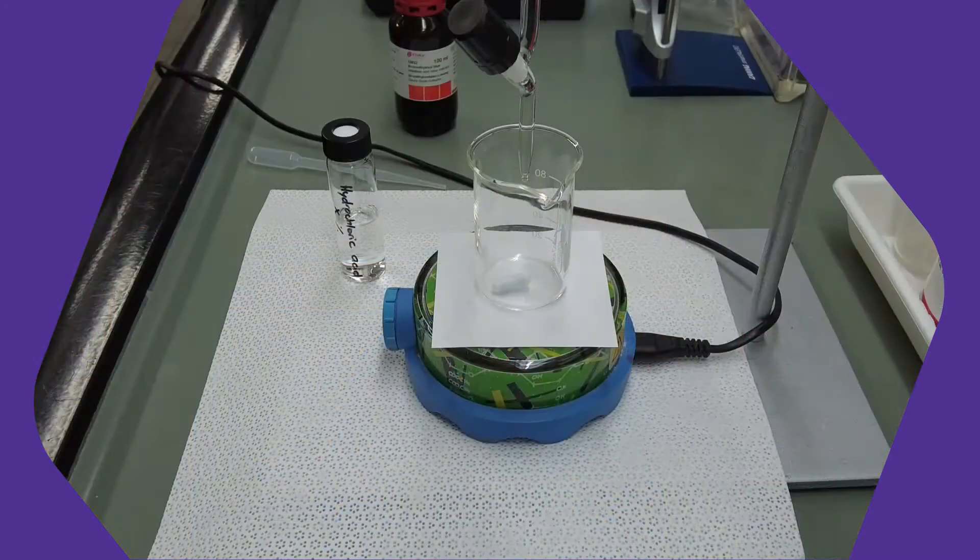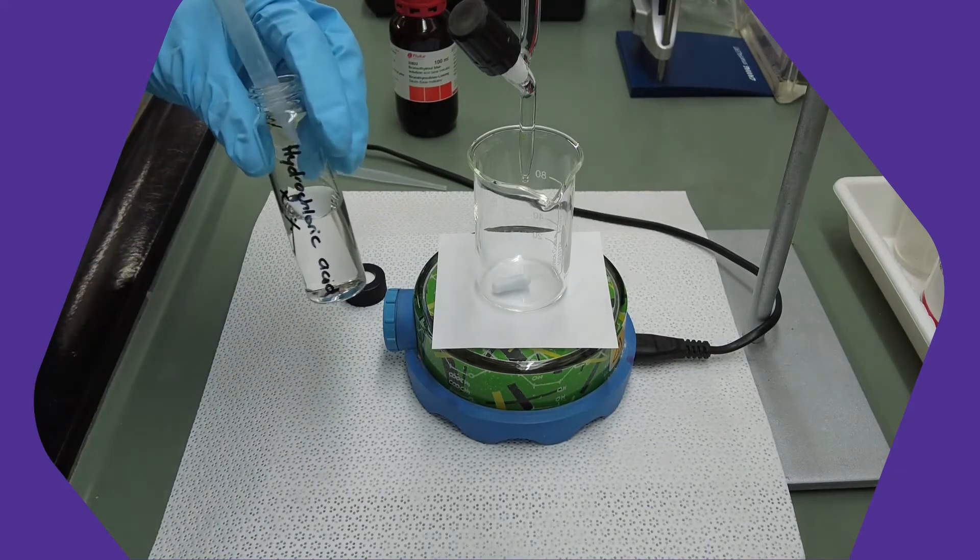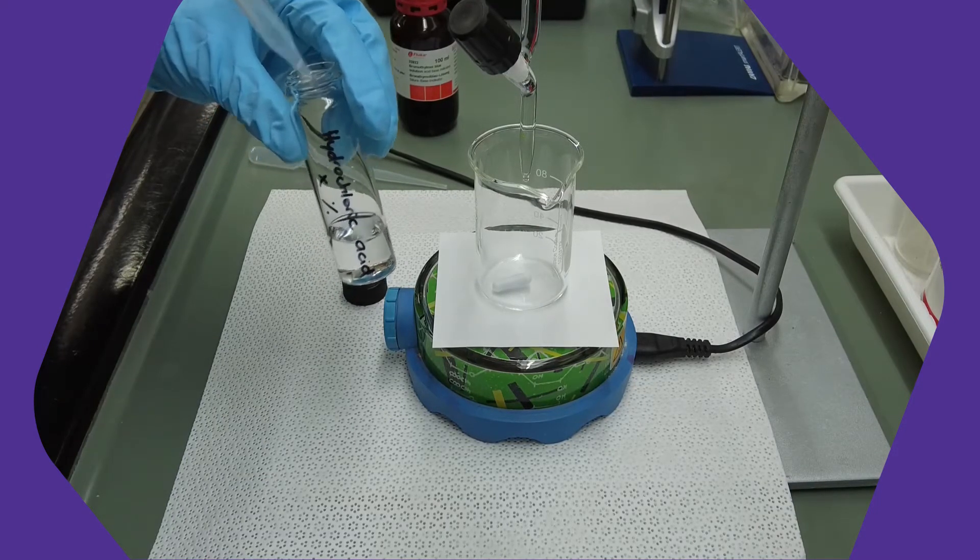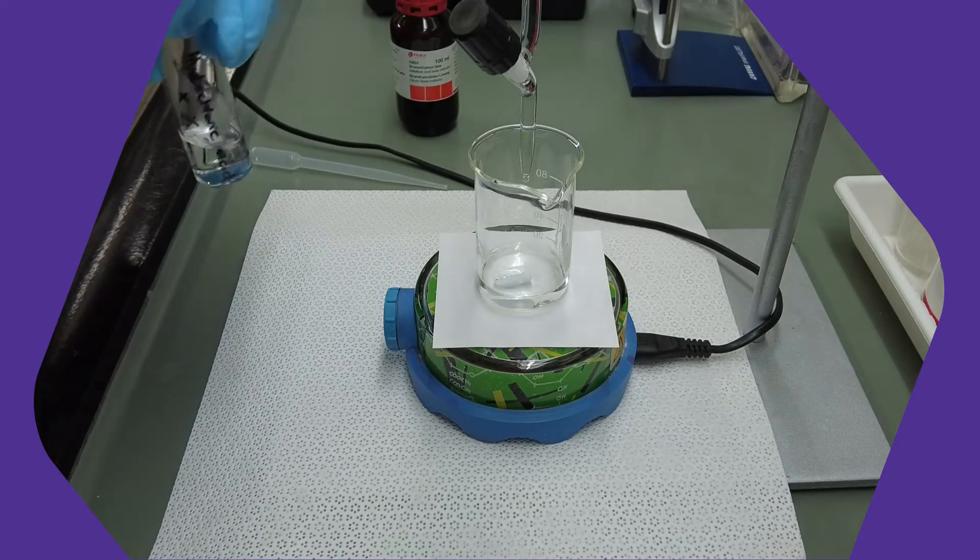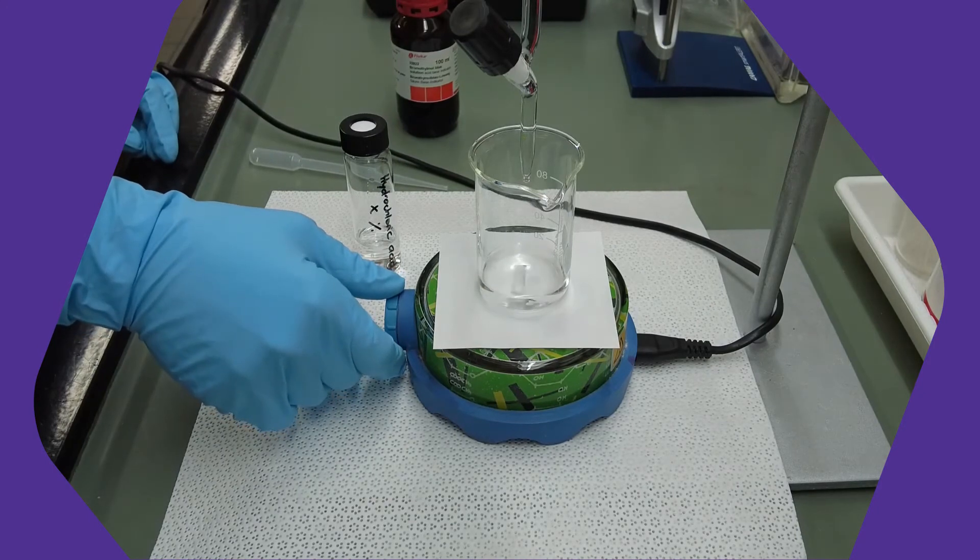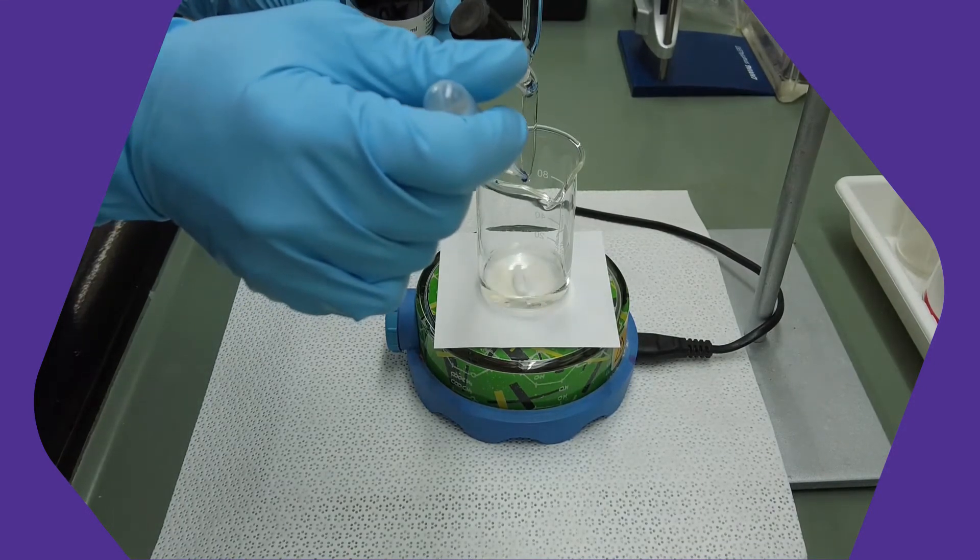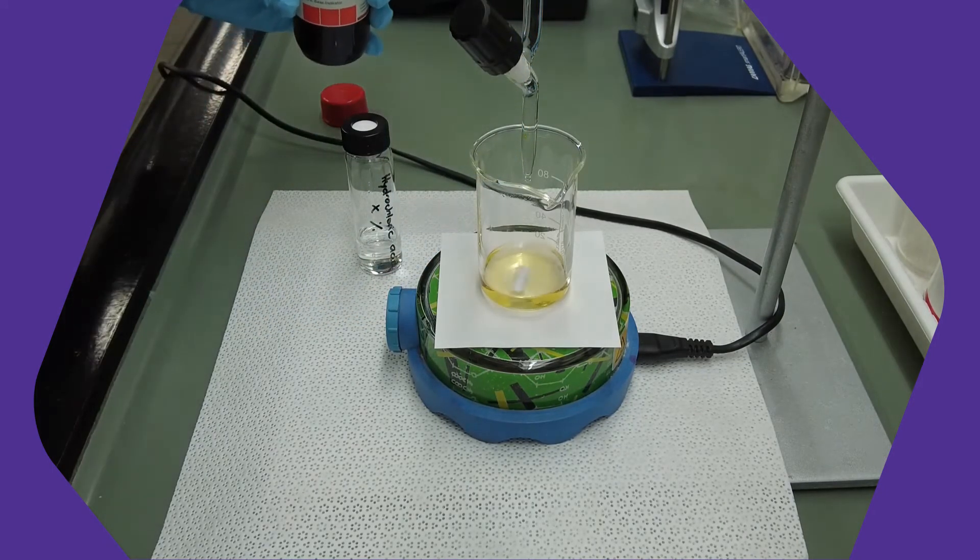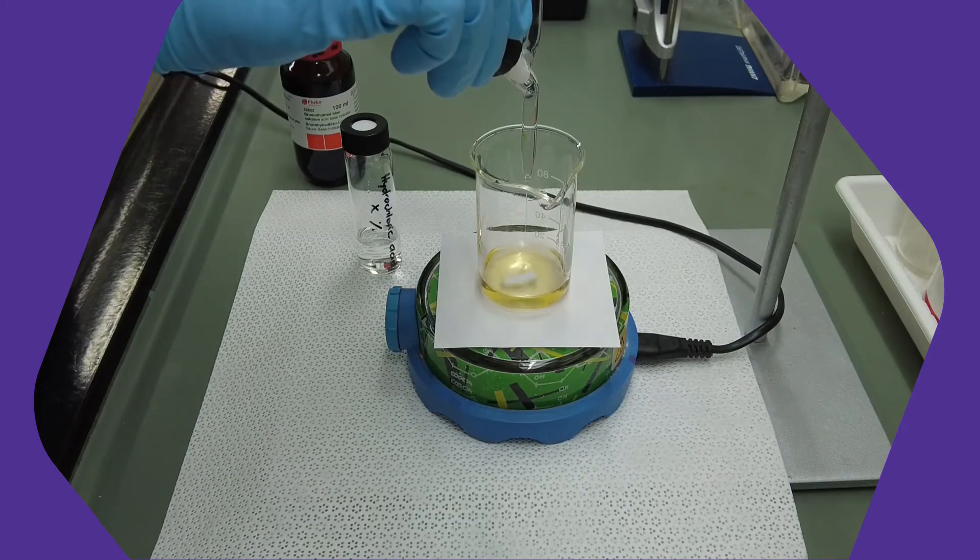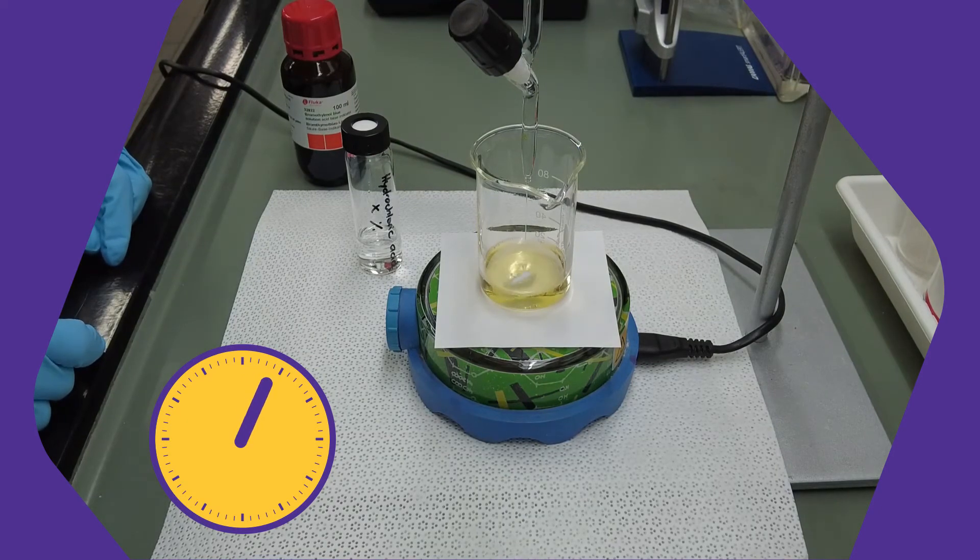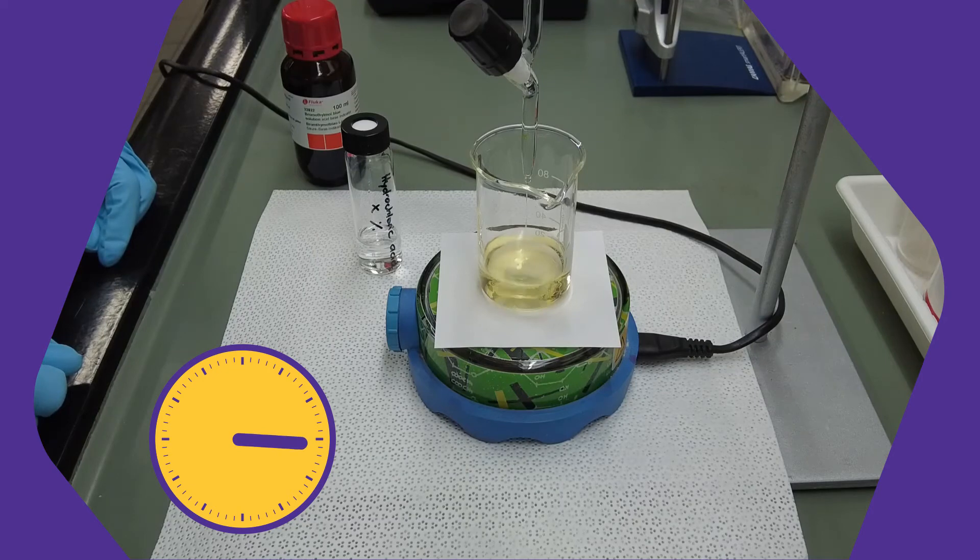I prepared a quick example for you. We now put exactly 10 milliliters of hydrochloric acid with an unknown concentration into a beaker. We also add a few drops of indicator solution. The concentration of hydrochloric acid can be determined by titrating it with sodium hydroxide solution with a known concentration. In our example, it has a concentration of 10%. The sodium hydroxide solution is already in the burette.